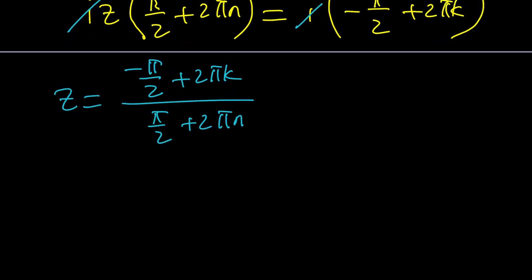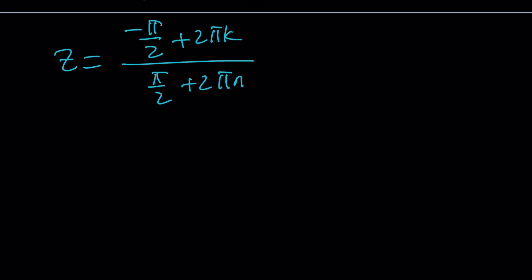Now, what happens, first of all, if k and n are equal? That would be a good question. Even if k and n are both 0, that would be an interesting case. Let's go ahead and look at some simple cases. If they're both 0, then we're going to have like an interesting ratio of negative pi over 2 divided by pi over 2. z would be negative 1. But is negative 1 a solution? Let's check it out.